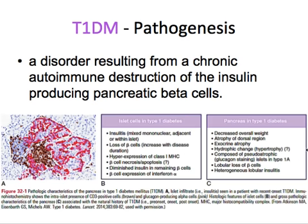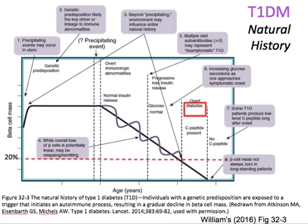In patients with type 1 DM, there is a decreased overall weight of the pancreas, atrophy of the dorsal region, exocrine atrophy, and lobular loss of beta cells.